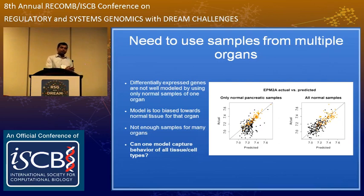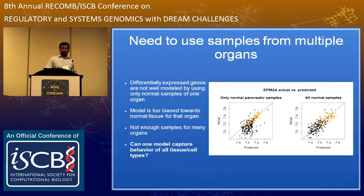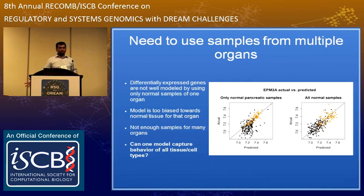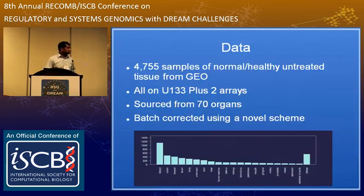Now here is the second problem: will one model suffice for all organs? Does one gene expression regression model suffice for all organs? It is not very clear, because most people make independent networks — if doing brain studies, they make a network specifically with brain samples. It is not clear that a network made on another set of organs will work well on a different set of organs.